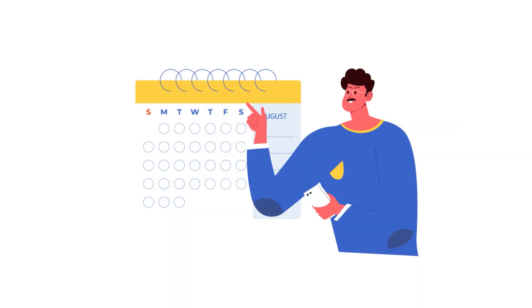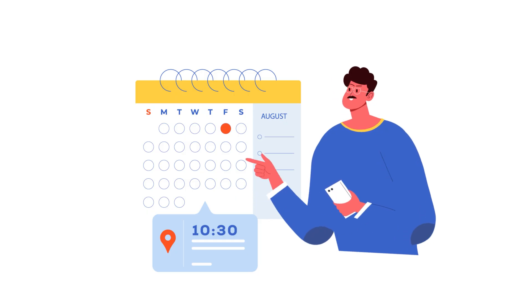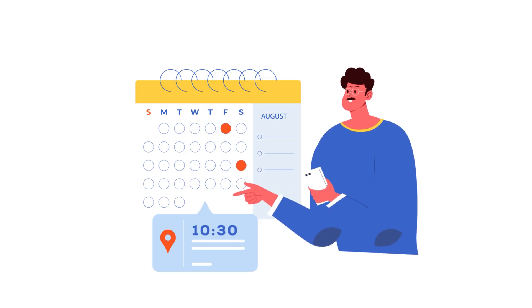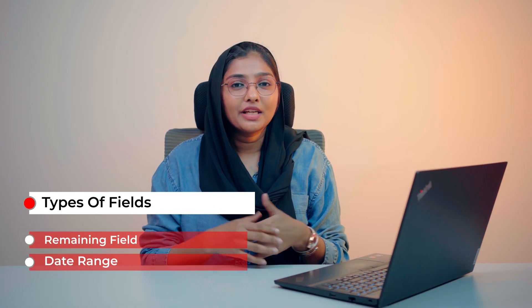The date and time field is basically used for setting the date on the calendar and time on the clock. If the user's time is not set, the user's current time will be automatically taken. Under this field, we also have two more fields: the remaining field and the date range.